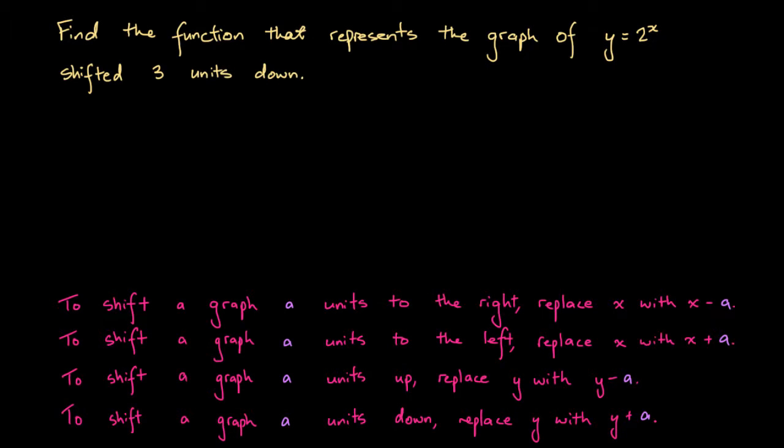In order to shift the graph of y equals 2^x three units down, what we have to do is replace y with y plus 3, according to our rule.